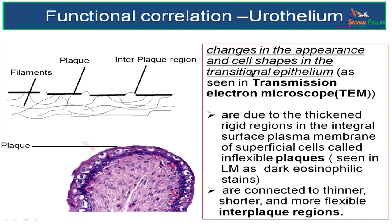Plaques are visible only in a transmission electron microscope. They are connected to thinner, shorter regions which are more flexible — these are called interplaque regions. The significance of plaque and interplaque regions as studied with a transmission electron microscope: these interplaque regions are going to act as hinges.